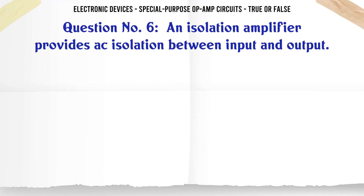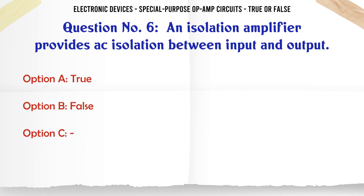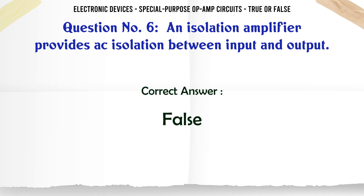An isolation amplifier provides AC isolation between input and output. A. True. B. False. C. D. The correct answer is False.